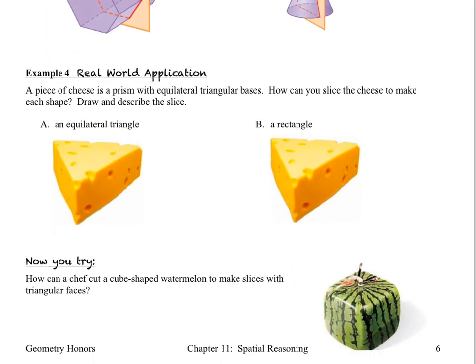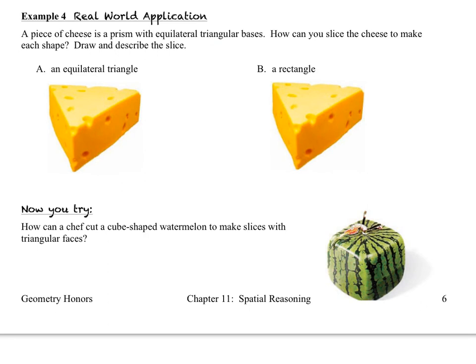Let's take a look at example number four next. In example number four we have a piece of cheese for question A and question B and it says a piece of cheese is a prism with equilateral triangular bases. The question asks us how can we slice this prism to create in this case an equilateral triangle and you can see based on the shape that we already see that all we would need to do is to make the slice or cut the cross section like so so that the top would be that equilateral triangle slice. Now in question B we want to create a rectangle and we can see remember that we've got parallelogram faces so all we would need to do is to create the cross section by slicing through from one of the triangular bases to the other triangular base along the face.